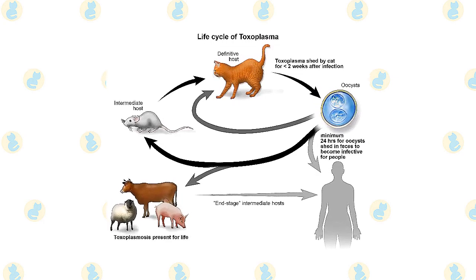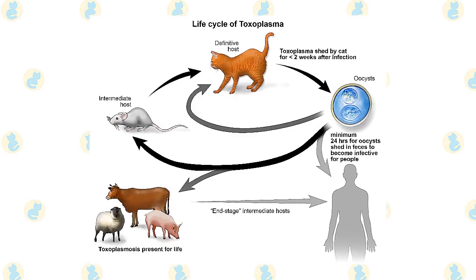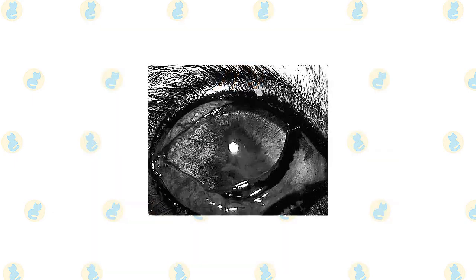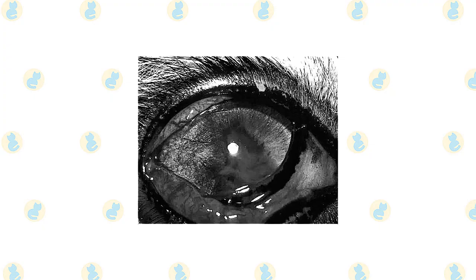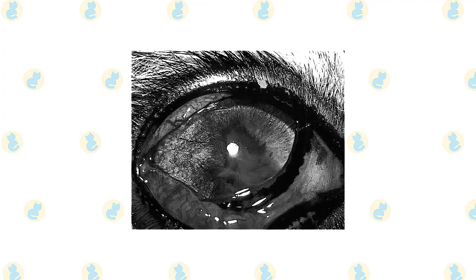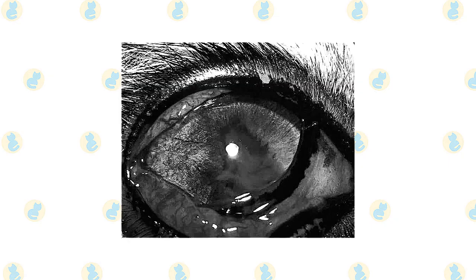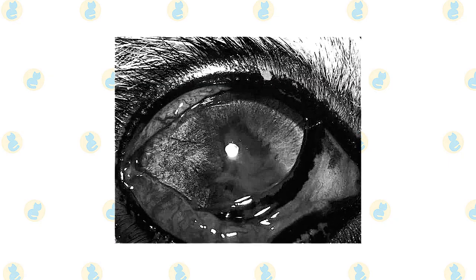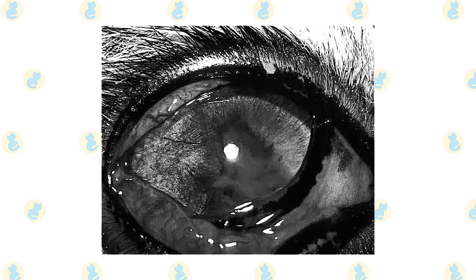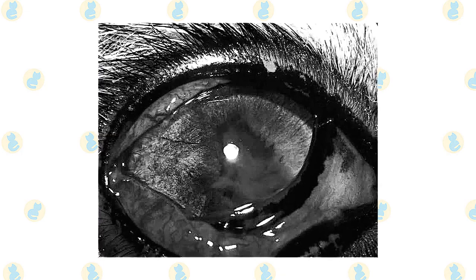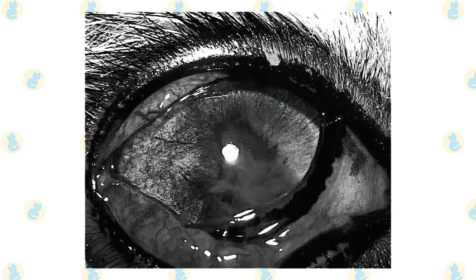Although cats are an essential element of T. gondii's life cycle, the parasite seldom causes clinical illness in them. While T. gondii seldom produces major symptoms in healthy individuals, the Centers for Disease Control and Prevention (CDC) has recognized Toxoplasmosis as one of five neglected parasite diseases of humans owing to its high frequency. It is estimated that more than 60 million people in the United States are afflicted.